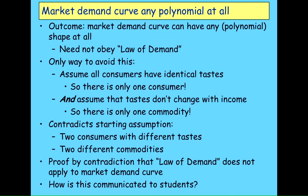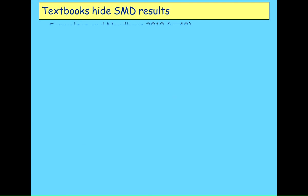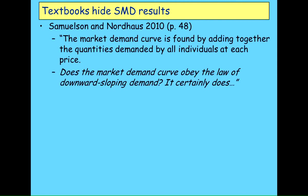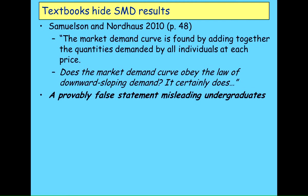Now how has this result been communicated to students? Samuelson and Nordhaus 2010: 'The market demand curve is found by adding up the quantities demanded by all individuals at each price. Does the market demand curve obey the law of demand? It certainly does.' That is a provably false statement. Looking in the book again, I found that Samuelson only thought he proved it by assuming that the entire American economy operated as one big happy family which redistributed income prior to trade. Does the man even live in the United States?